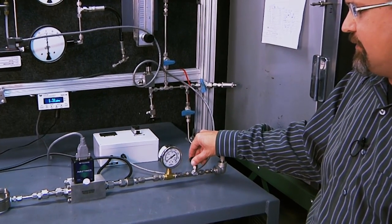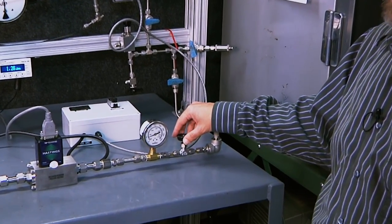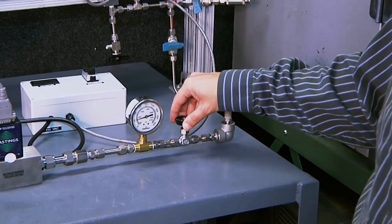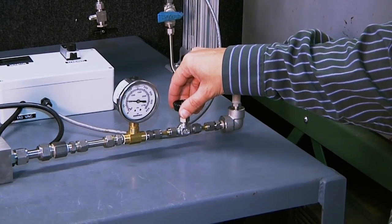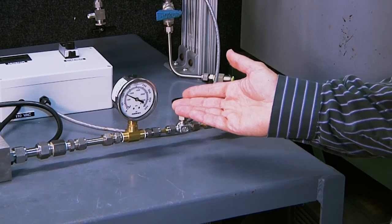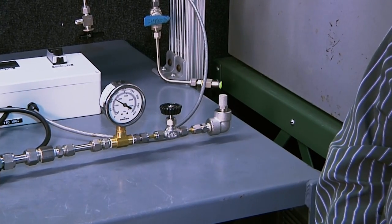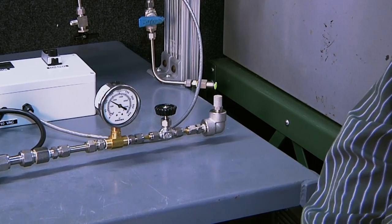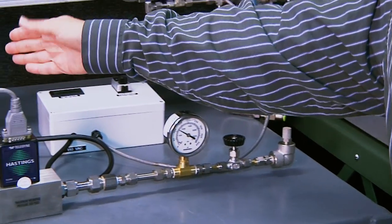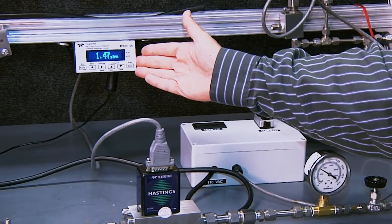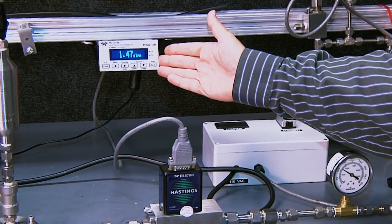If I slowly increase that restriction—now this could happen when lines plug up or things like that—we're going to run up. Now we've got something about 125 PSI of system restriction now. And if we come back over to our mass flow monitor, we'll see that we're still at about one and a half standard liters per minute.